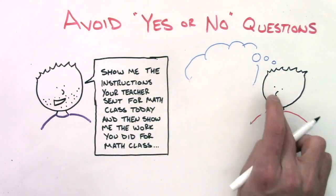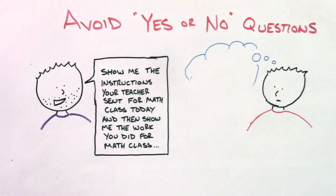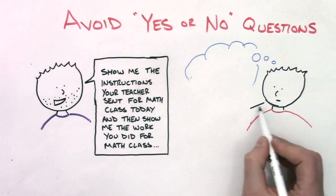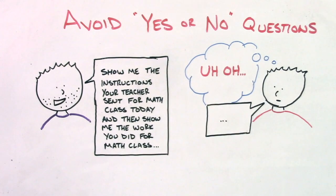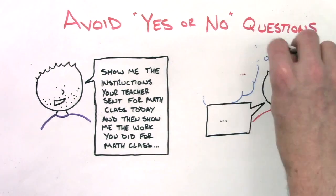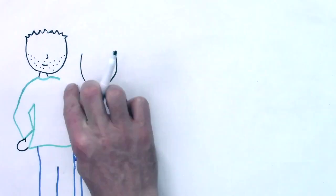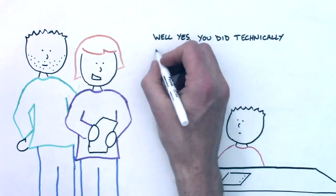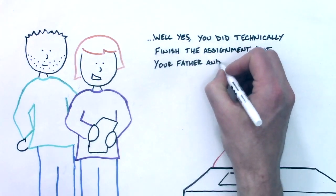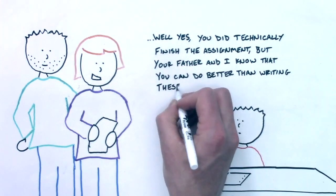By asking this, you're pushing your child not just to tell you if they got the work done, but to instead demonstrate that they did the work. This also gives you a chance to quickly glance over the work your child did to see if it matches both the expectations of the teacher as well as your expectations of your own child's effort.